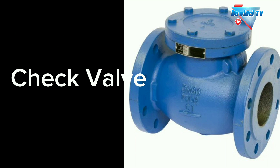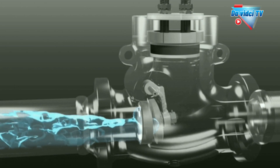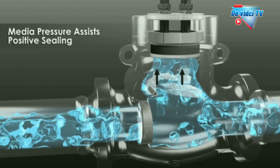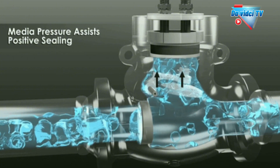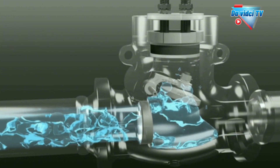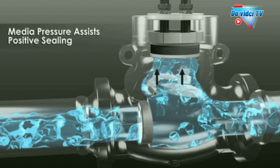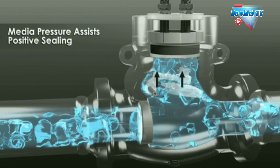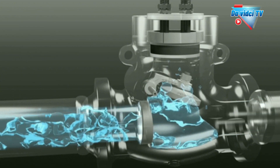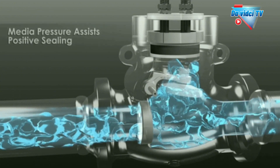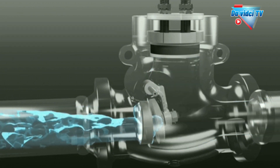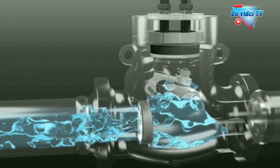Whether you work with large diameter pipe or tiny intricate precision tubing lines, check valves are incredibly useful. They can help pumps keep pumping, pressure vessels stay pressurized, and reduce waste from blowouts and line breakage.